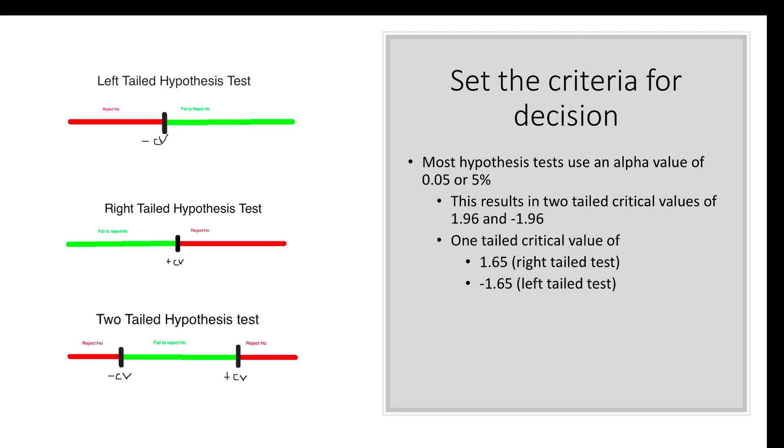Most hypothesis tests we are going to work with deal with a level of significance of 5% or 0.05. When we're working with z-tests, and this is z-tests only,